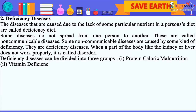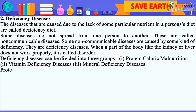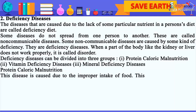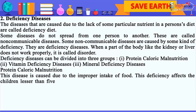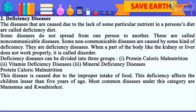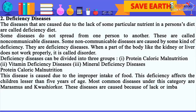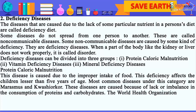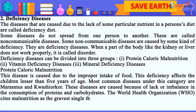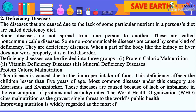Protein caloric malnutrition: This disease is caused due to the improper intake of food. This deficiency affects children less than five years of age. The most common diseases under this category are Marasmus and Kwashiorkor. These diseases are caused because of lack or imbalance in the consumption of proteins and carbohydrates. The World Health Organization cites malnutrition as the gravest single threat to the world's public health. Improving nutrition is widely regarded as the most effective form of aid.